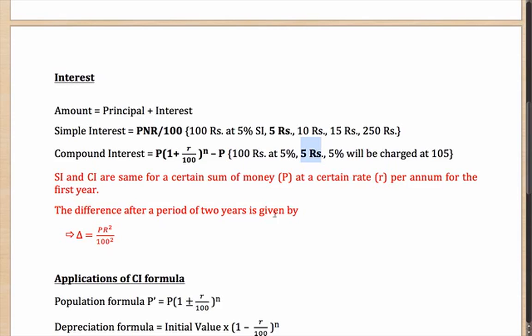The difference after a period of 2 years is given by the formula P R square by 100 square, where P is the principal and R is the rate of interest. If you have to calculate beyond that, I suggest you use the formula and calculate the interest and then see the difference.